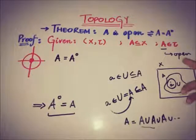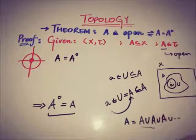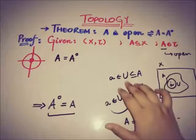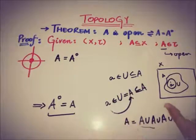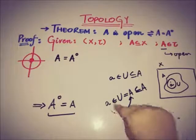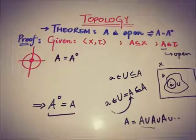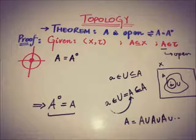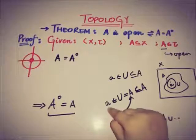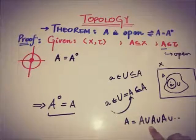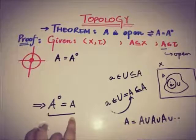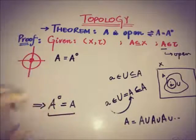To summarize the forward direction: if A is open, then A belongs to the topology, so for every element a of A there exists an open neighborhood U such that a belongs to U and U is a subset of A. Since A is open, U equals A and A is a subset of itself. By the definition of interior as the union of all open neighborhoods, the interior of A equals A. This is proved.